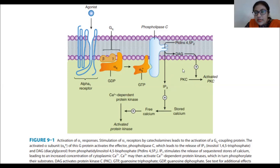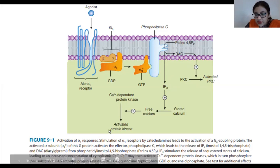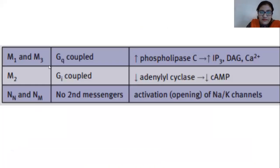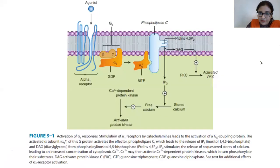IP3 converts stored calcium into free calcium, and protein kinase C gets activated, initiating downstream cellular activities. Going back to the slide: M1 and M3 work with the Gq-coupled protein, enhancing phospholipase C activity, producing more IP3 and DAG, and consequently more calcium release. IP3 is inositol 1,4,5-triphosphate and DAG is diacylglycerol.